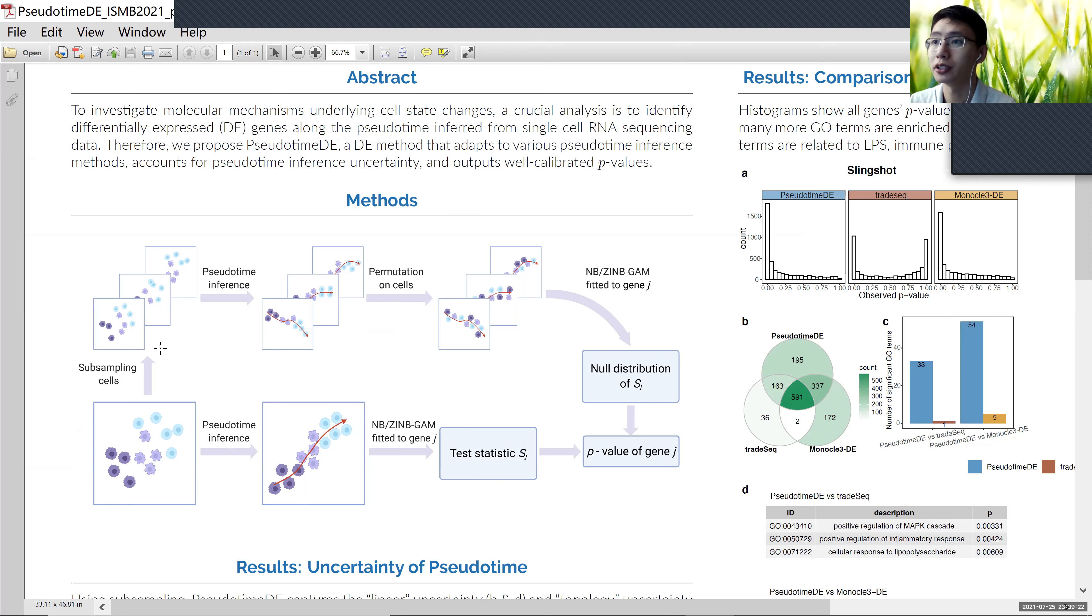In order to capture the uncertainty of the pseudotime, we use subsampling of the original data set, and we perform pseudotime inference within each subsample.